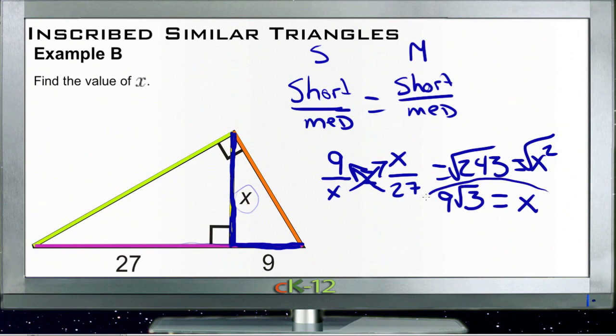So that tells us that our medium side, our missing side here, is 9 square roots of 3. And we didn't have to worry about the other information at all—we didn't need it. We only needed this little bit right here.